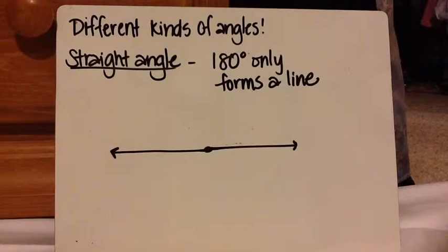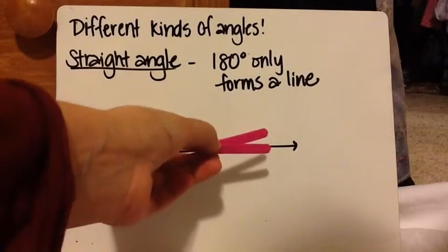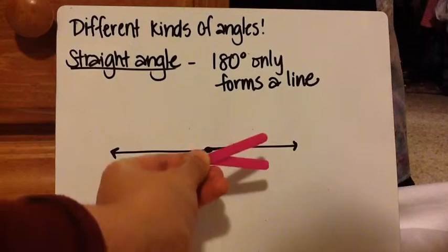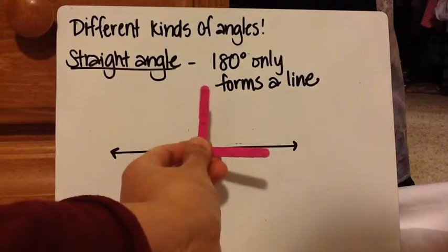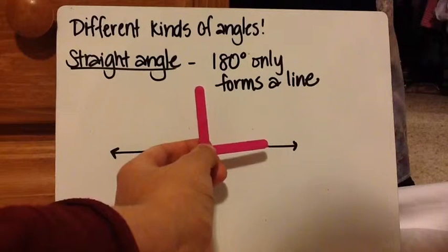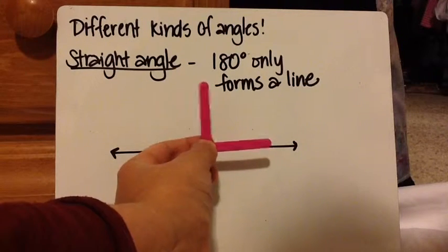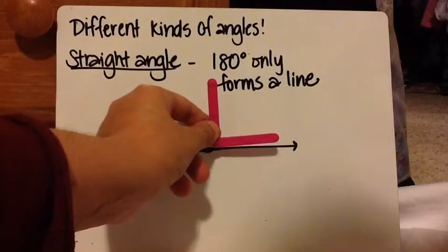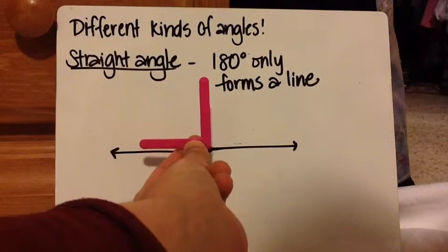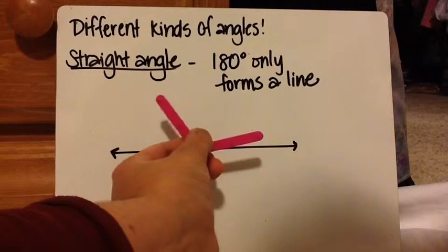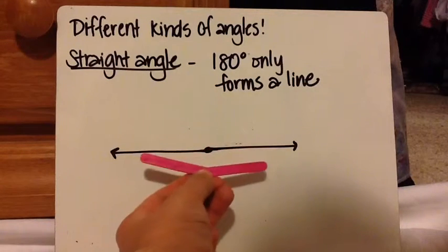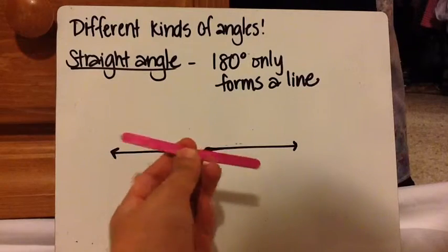This last one is really easy. It's called a straight angle. It is 180 degrees only, and it forms a straight line. So going from no angle, through acute, up to the 90-degree right angle — if you had a right angle here and a right angle here, 90 plus 90 equals 180. Then you'd go through obtuse, and at that point you'd have 180 degrees, which is a straight angle.